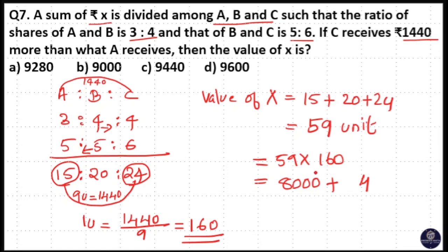54, 9 into 1, 9, 9 plus 5, 14. So your answer is 9440. So option C is your answer.